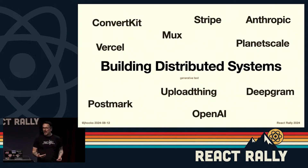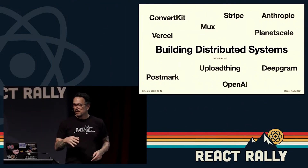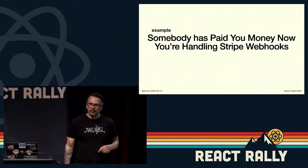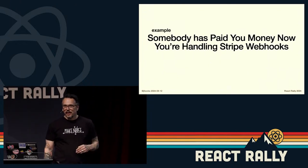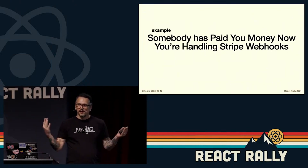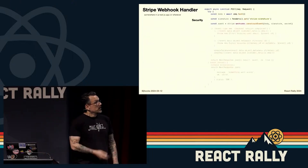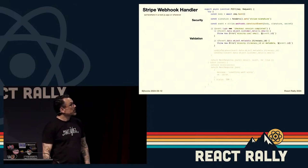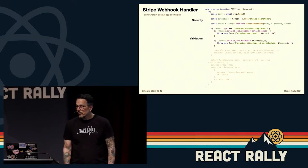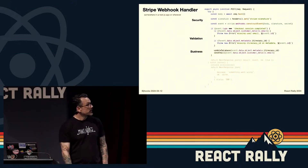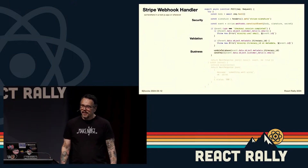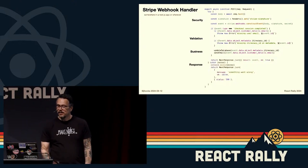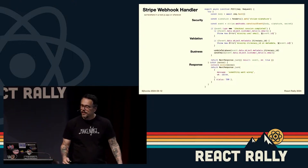When I asked if anybody's building event-driven systems and one person raised their hand — I suspect that actually isn't true. If you start thinking about these other services in the mix: if somebody has paid you money and you're handling Stripe webhooks, a webhook at the end of the day is an event-driven system. It's an event being passed to your system. Stripe handling typically means you validate it's actually from Stripe, validate the payload, execute business logic, and send a response back to Stripe.